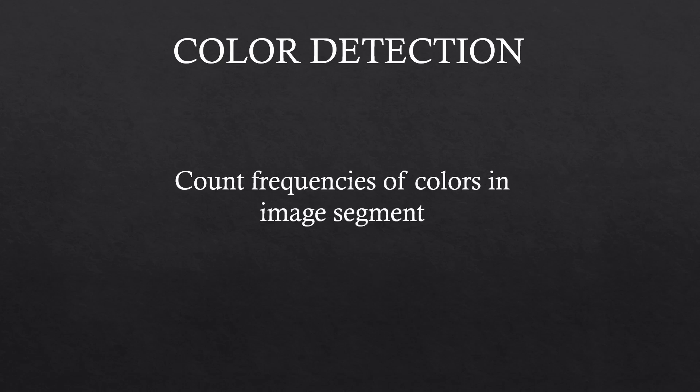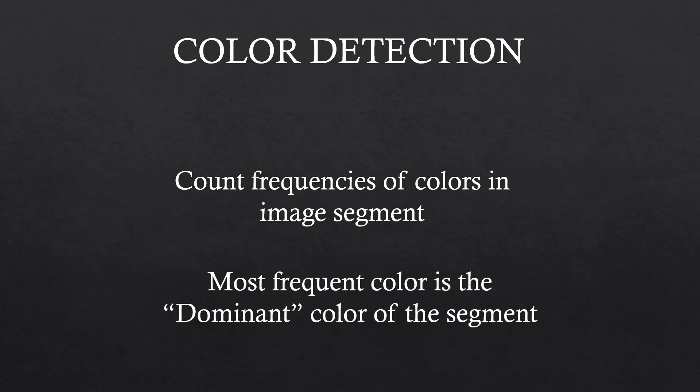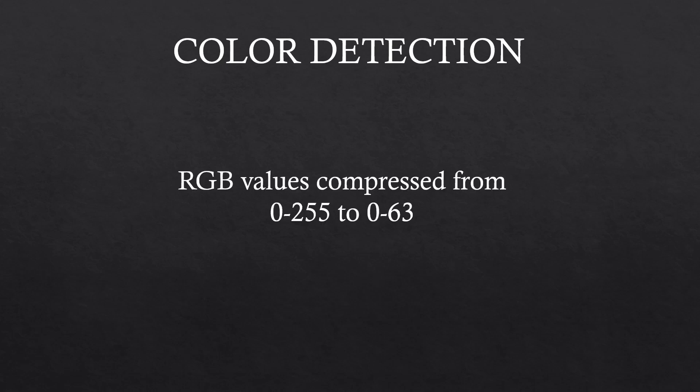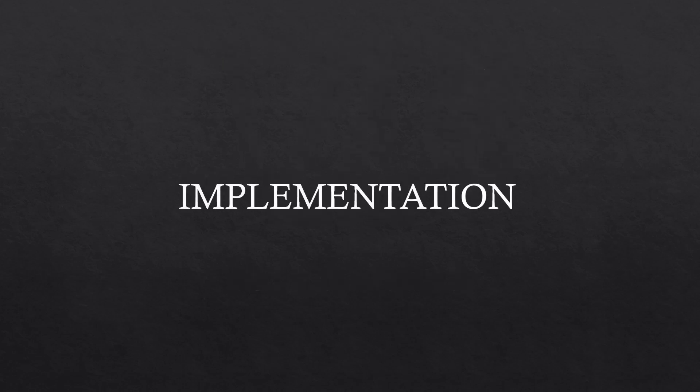We will iterate through each pixel in the segment and increment its frequency by one. At the end, we will find the most frequent color in the segment, and print the ASCII character in that color. A small modification we will make here is that instead of using RGB values for each pixel ranging from 0 to 255, we will compress it to be 0 to 63. This way, we can avoid counting colors that are very nearly the same as different. For example, 200,0,0 and 200,1,0 are very similar, and we don't want to count them as different colors.